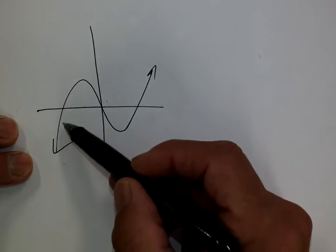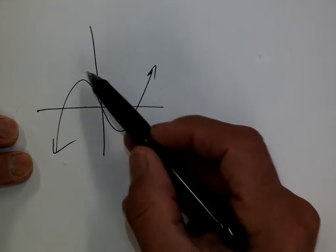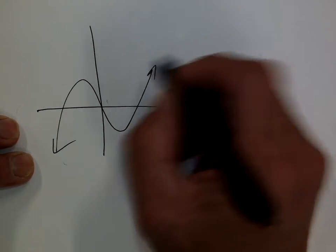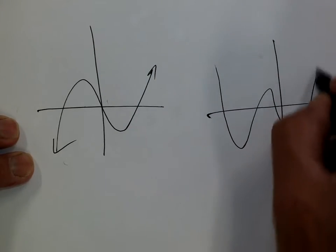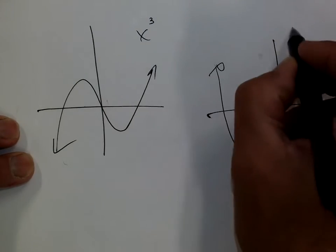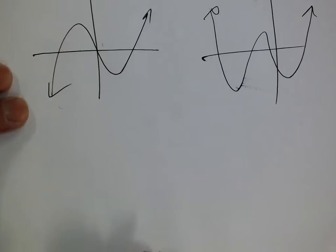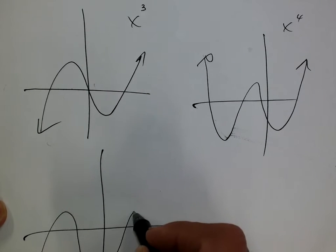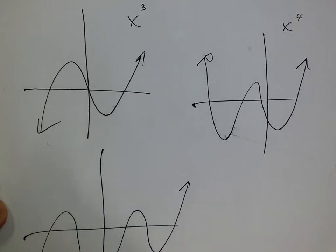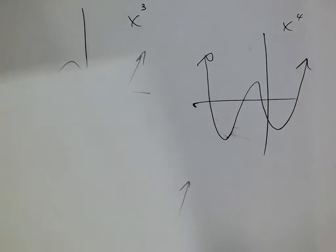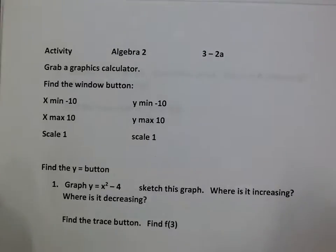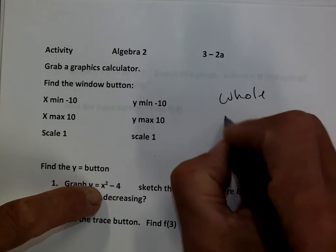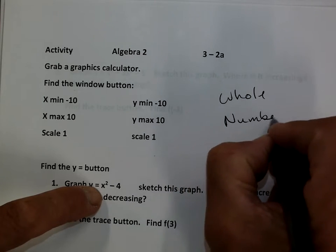For example, this is an x cubed because it goes up, down, and back up again. That's an x cubed equation, and it's still a polynomial. Then there's x to the 4th, x cubed, x to the 4th, and x to the 5th — they go on and on. So polynomials are curvy graphs, and they have to have whole number exponents.